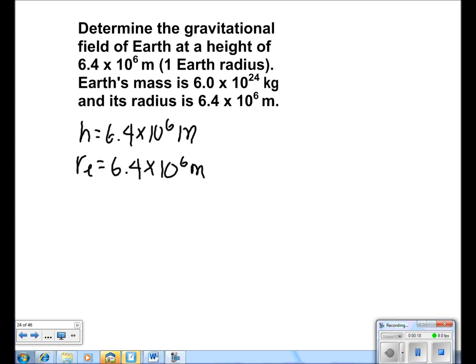We know that the mass of the Earth is 6 times 10 to the 24th. And we also know that G is equal to 6.67 times 10 to the negative 11 newtons times meters squared over kilograms squared.